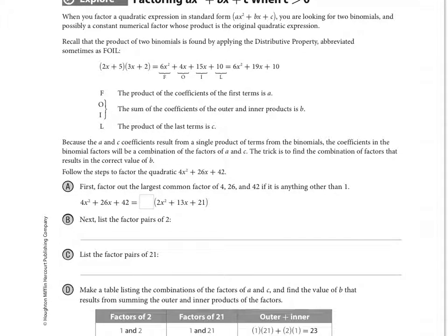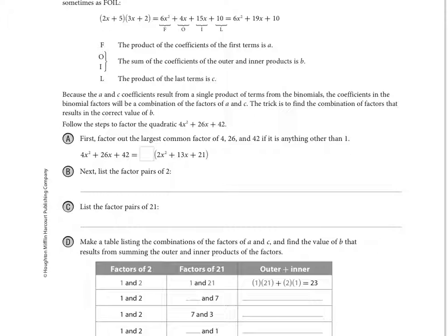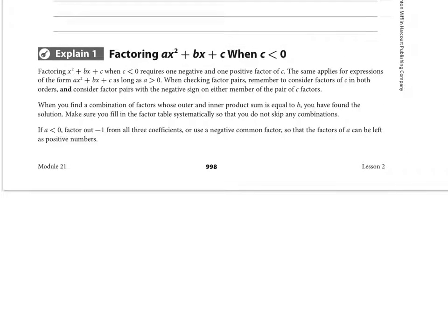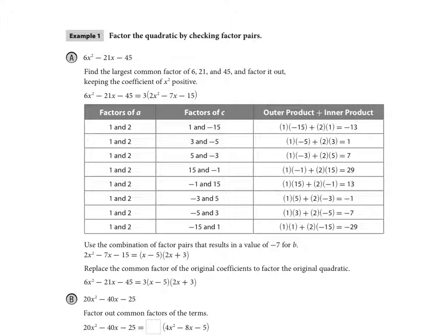We'll walk through the FOIL and mental math approach, which may be slightly different than the textbook's. They talk about different scenarios when 'a' or 'c' is less than zero — meaning negative. If 'c' is negative, we are subtracting, and we subtract when our signs are different. In the given example, they've first taken out a common factor of 3, which simplifies the quadratic we need to factor.